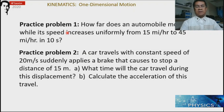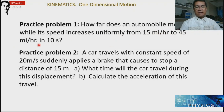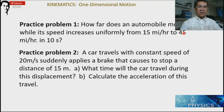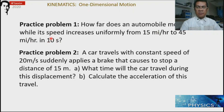For your practice, solve this problem: find how far an automobile moves while its speed increases uniformly from 15 miles per hour to 45 miles per hour in 10 seconds. You can use the algebra-based approach. Start from the acceleration equation — compute the acceleration from the initial and final velocities. Be consistent with your units, since the speed is in miles per hour and time is in seconds — convert to the same unit system.